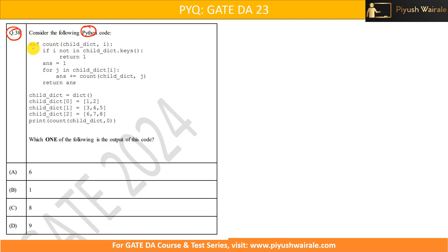Consider the following Python code. Here they have defined one function that is basically a count, and this particular function is taking two inputs. First one is child_dictionary and second one is i. So the count function is defined which is taking two inputs.